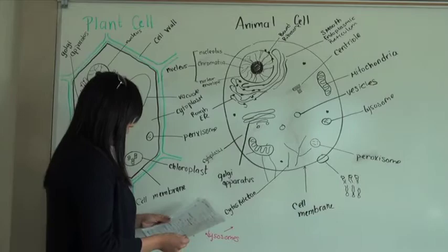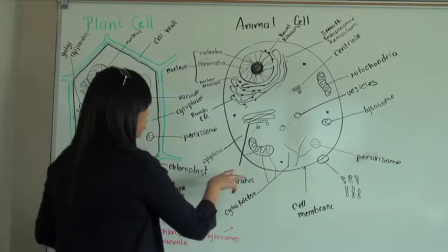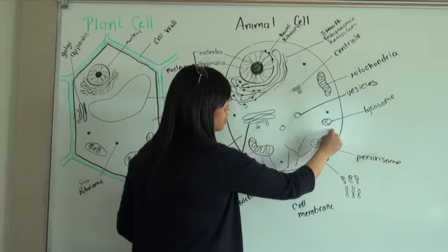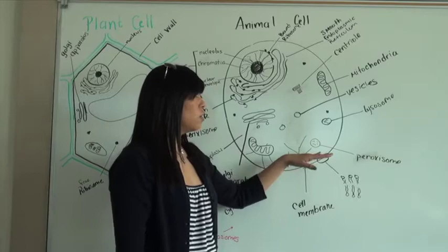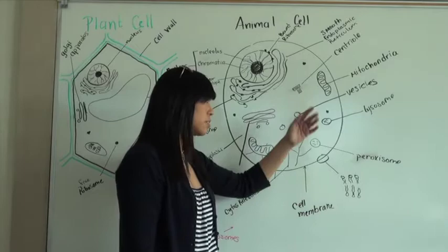We also have these structures right here, the lysosomes. The lysosomes actually are within the animal cell only. The animal cell contains these things called lysosomes and they're used to break down worn down material within the cell, worn down organelles. When mitochondria doesn't work, they come in and break them down.